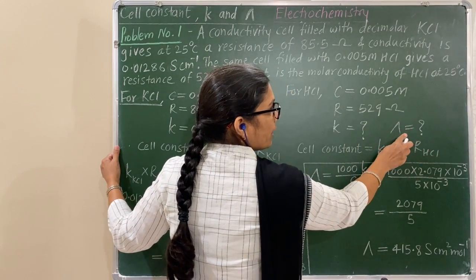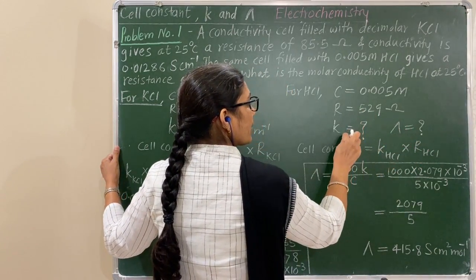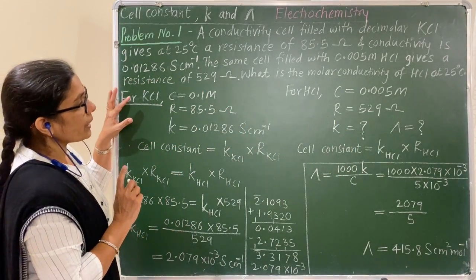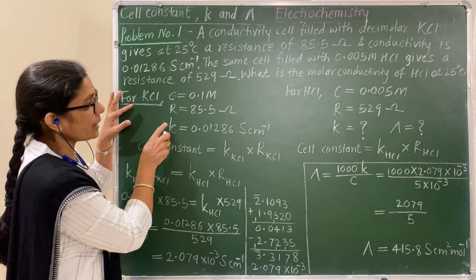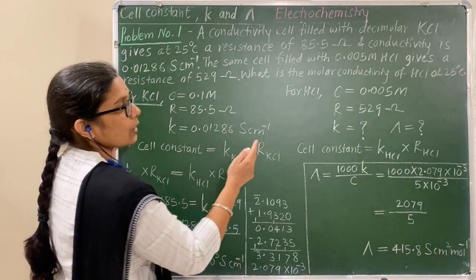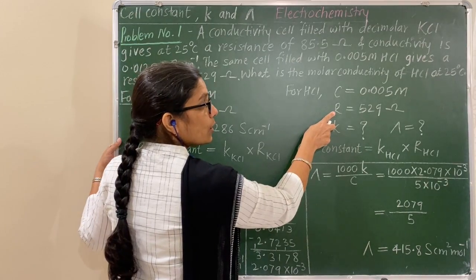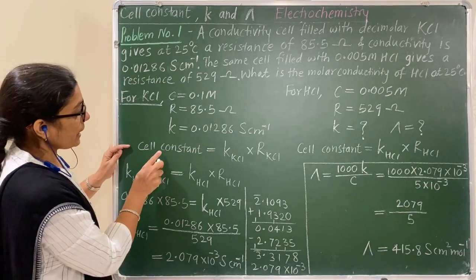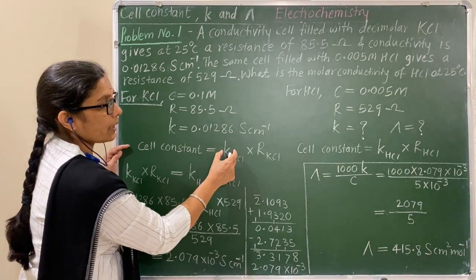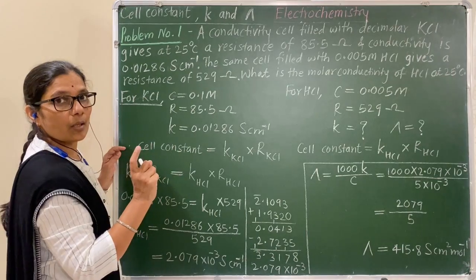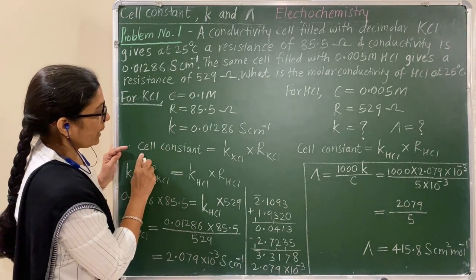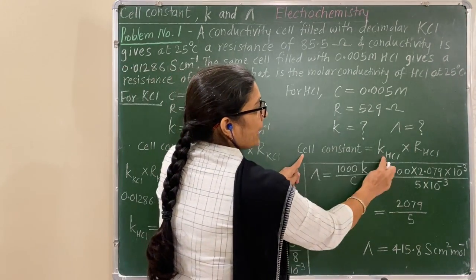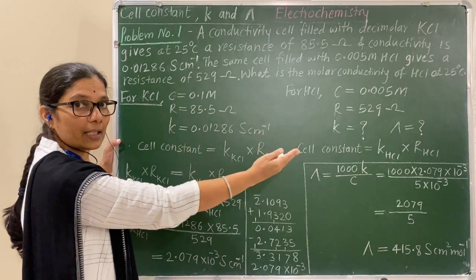For the determination of molar conductivity, we require conductivity. For KCL solution, resistance and conductivity are known. For SCL solution, resistance is known but conductivity is not known. You know the formula: cell constant is equal to conductivity multiplied by resistance of that solution. The same formula applies for both KCL and SCL since the same cell is used.